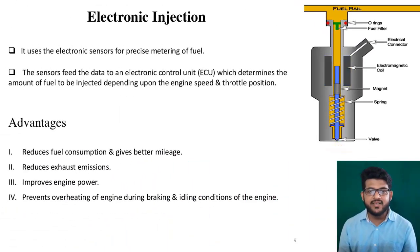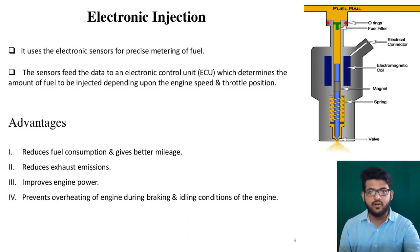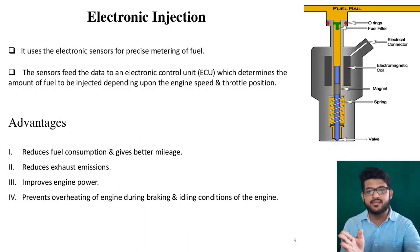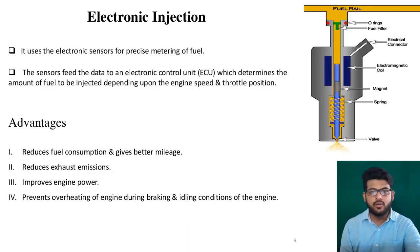The main advantages of electronic injection are that it reduces fuel consumption and gives better mileage, because fuel is measured electronically rather than mechanically, eliminating mechanical losses. Right now, in almost all vehicles under BS6 (Bharat Stage 6), a fuel injection (FI) system is used, which includes this electronic injection. It is slightly costly but gives better mileage.